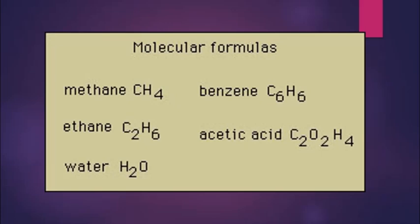Next is the molecular formula. A molecular formula indicates the number of atoms of each constituent element present in one molecule of a compound. For example, methane is CH4 — one atom of carbon and four atoms of hydrogen. Ethane has two atoms of carbon and six atoms of hydrogen. Water has two atoms of hydrogen and one atom of oxygen. Benzene has six atoms of carbon and six atoms of hydrogen. Acetic acid has two atoms of carbon, two atoms of oxygen, and four atoms of hydrogen.